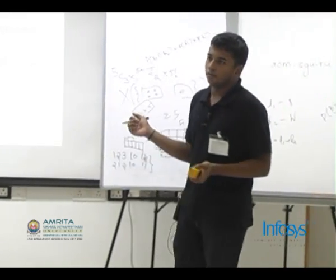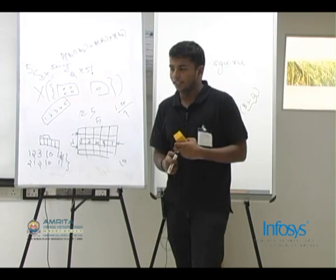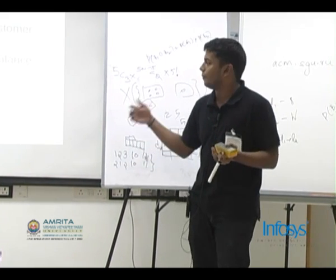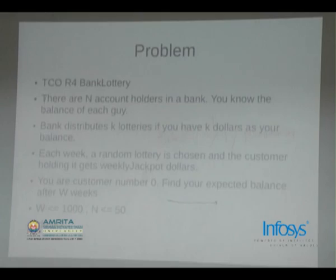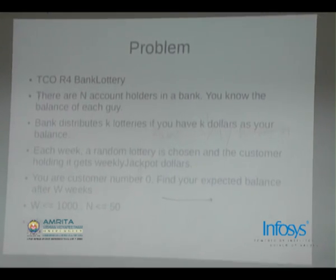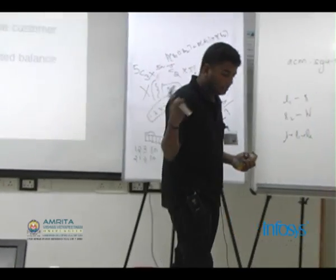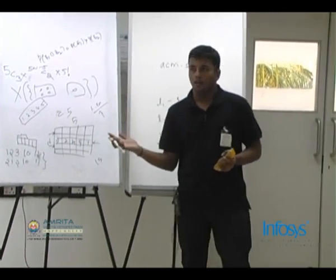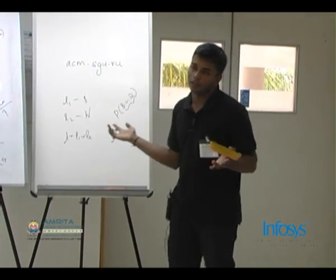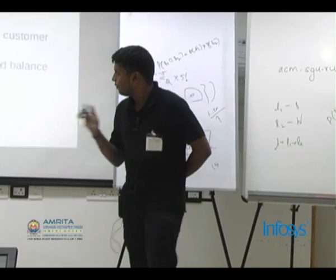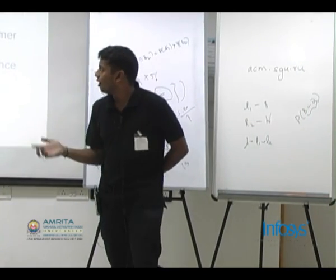I'll go on to the next problem, which is again from a fairly recent contest. Both these problems are of easy difficulty, and my point is that whether probability comes up in a very hard or very easy problem, the concept is pretty much the same. Let me describe the problem statement: there is a bank with n account holders, and each week the bank has a draw.